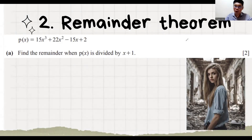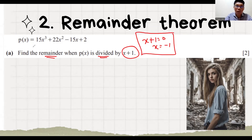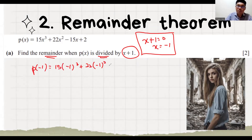We go to the second theorem, which is Remainder Theorem. It's exactly the same as Factor Theorem — you also substitute the value. They say find the remainder when it's divided by this. So we know that x plus 1 equals 0, x equals to minus 1. But for Remainder Theorem, instead of your whole equation getting 0, you get another value, and that value will be the remainder. We substitute in and find that it is 24, so the remainder is 24.